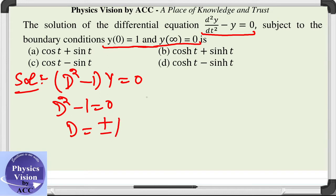D is equal to plus minus 1, which represents that we have y = c₁e^t + c₂e^(-t). This is our solution.